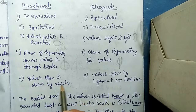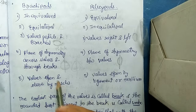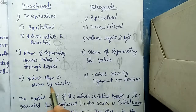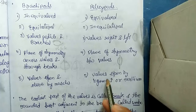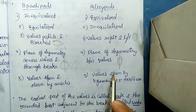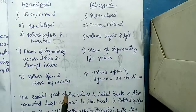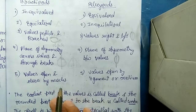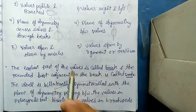The fifth difference is how the valves open and close. In Brachiopoda, the valves are opened and closed by muscles called diductors and adductors, as we have already seen. In Pelecypoda, the valves are opened by a ligament or resilium. These are the five main differences.